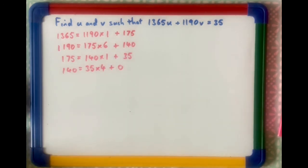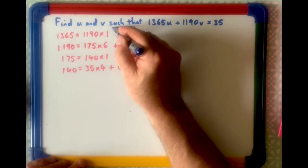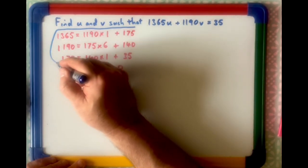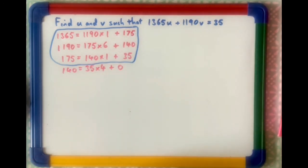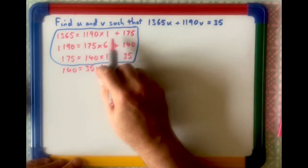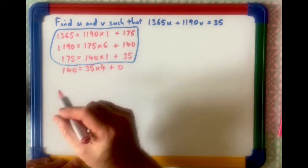And then the last line for this one was 140 equals 35 times 4 plus 0. Remember, as far as this sort of problem goes, we ignore the plus 0 remainder, but the rest of them, we want to make the remainder a subject. So, let's do that.